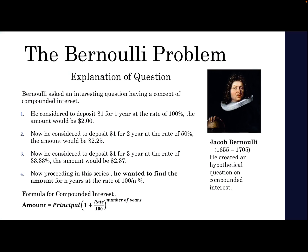Jacob Bernoulli posed an interesting question: if we invest $1 and get an interest of 100% for one year, it would become $2. If again we invest $1 and get an interest of 50% for two years by compounded interest, it would become $2.25.